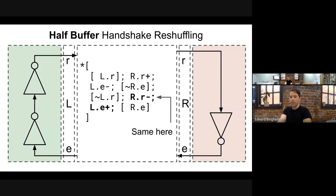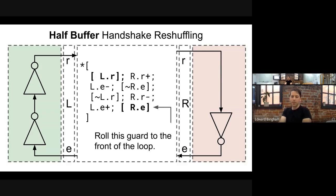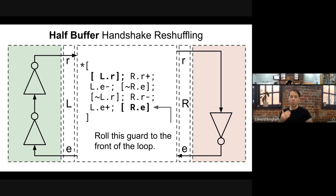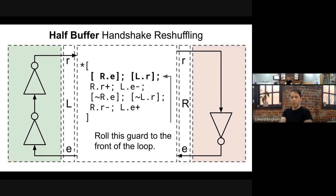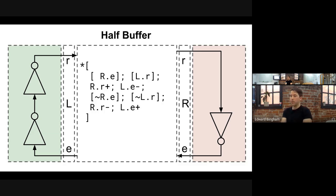We can switch those transitions around to our heart's content, and do the same for the reset phase. We also have a guard at the very end of the loop, and just like in software we can roll the loop — take the guard from the end and move it to the beginning. This gives us the final half-buffer handshake expansion: wait for R.e and L.r, raise R.r, lower L.e, wait for both to go low, lower R.r, raise L.e.